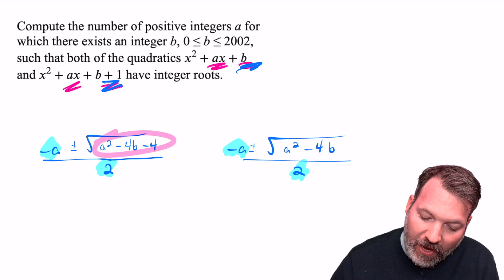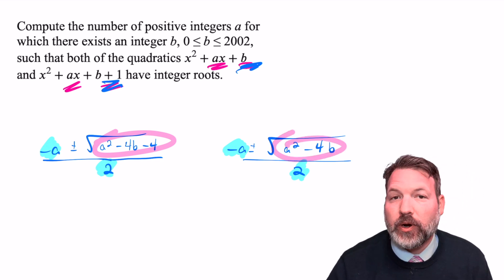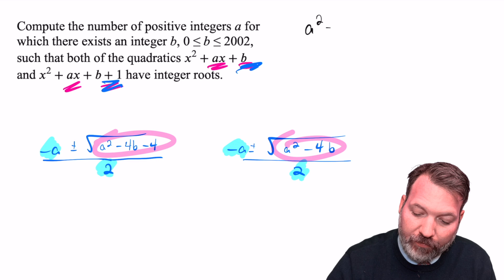So we can say that both A² - 4B - 4 and A² - 4B have to be perfect squares.